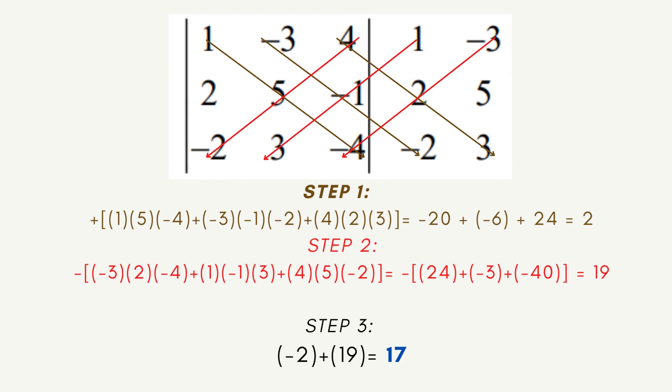For step 1, we will add the diagonal products going from left to right, that is in the brown colored arrow. For the first diagonal, we have 1, positive 5, and negative 4. For the second, we add negative 3 times negative 1 times negative 2 to the first diagonal. I am going to add the last diagonal product. We have positive 4, positive 2, and positive 3. This will give us positive 2.